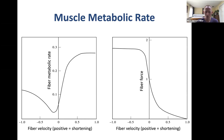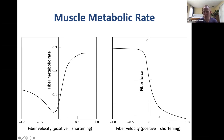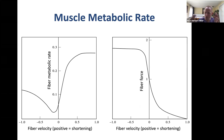The force-velocity relationship of muscle fibers shows that the faster you contract concentrically, the less force you can produce. On the other side, a similar graph plotting the rate of metabolic energy consumption shows that the faster the fibers contract concentrically, the more metabolic energy they consume. So faster contraction means less force produced AND more energy consumed — a double disadvantage.